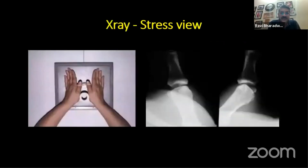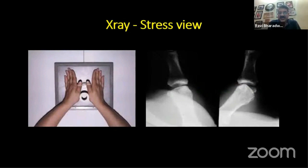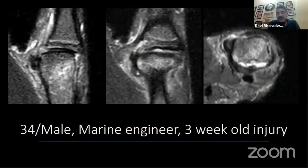X-rays are usually normal unless it's a very chronic case with obvious lateral subluxation. In doubtful cases you can give local anesthetic and perform a stress view — this is more academic but mostly it is a clinical diagnosis. If you have access to a good ultrasonographer, a USG scan or MRI gives a very clear definition of the torn ligament and can also identify a Stener's lesion.